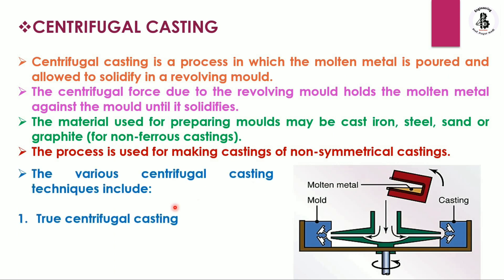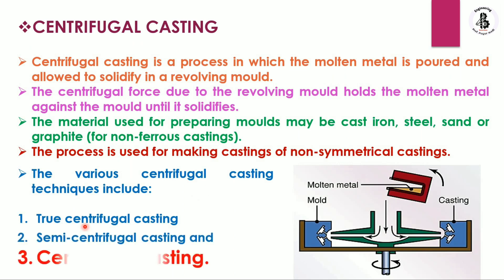The first type is the true centrifugal casting process. The second is semi-centrifugal casting process, and the last one is centrifuging casting process. In this video I am only focusing on the centrifuging casting process. If you want to learn about true centrifugal castings as well as semi-centrifugal castings, you will find a link on my info button. So let us start with the centrifuge castings.